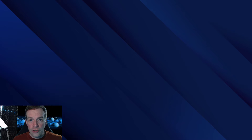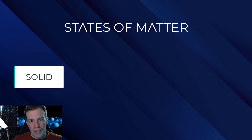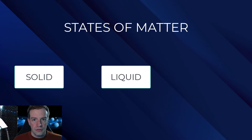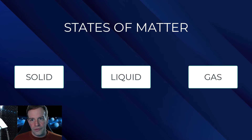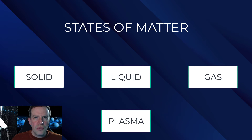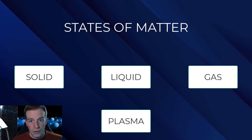We can't talk about changes in matter without talking about states of matter. There are three states of matter: solid, liquid, and gas. There are other ones like plasma, which is ionized gas, that we're not going to talk about in this particular video, but there are a lot of states of matter.